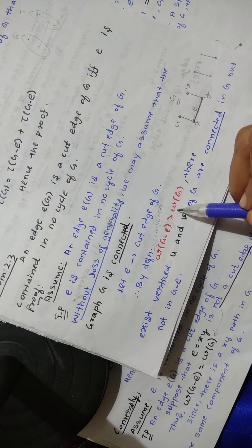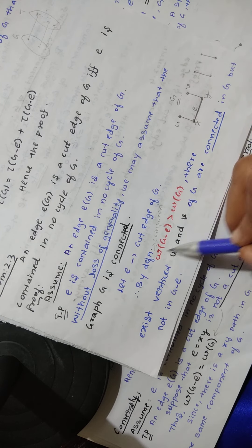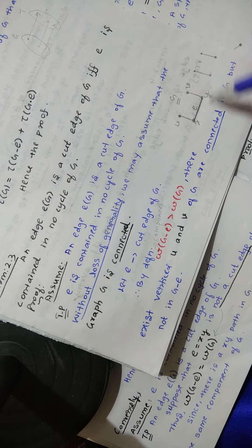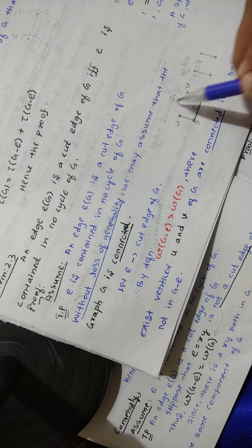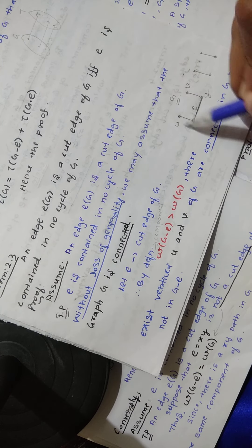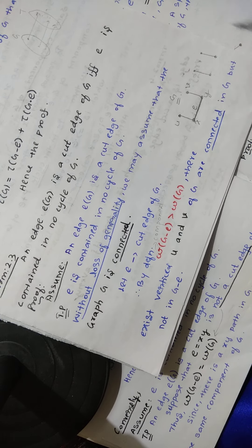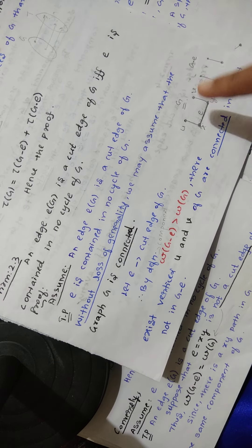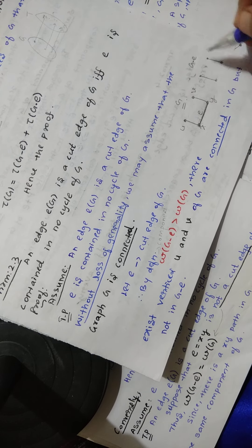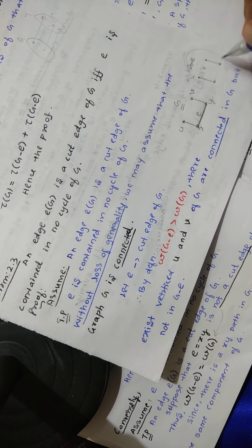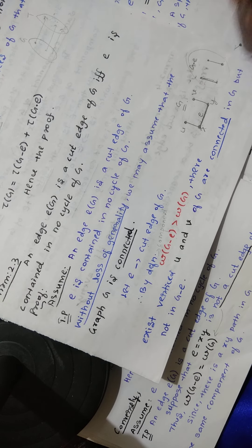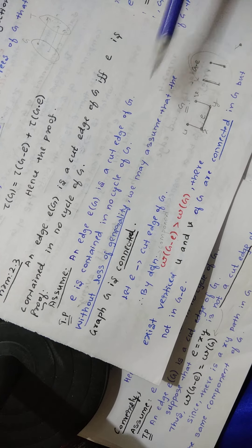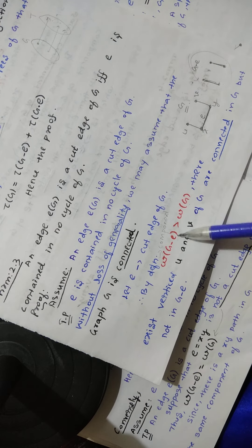The components of G minus E will be greater than the component of G. That is, for graph G, there is one component since it is connected. But when you look at G minus E — where E has been eliminated — this graph has two components. So if E is a cut edge, then by definition, ω(G minus E) is greater than ω(G).